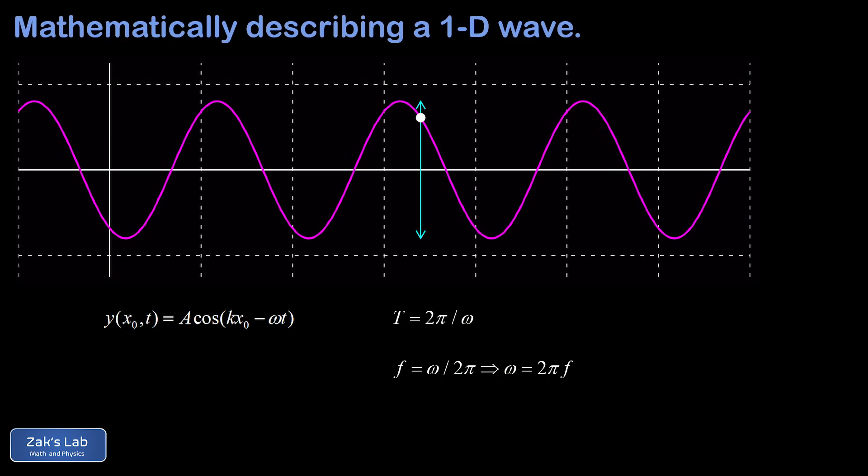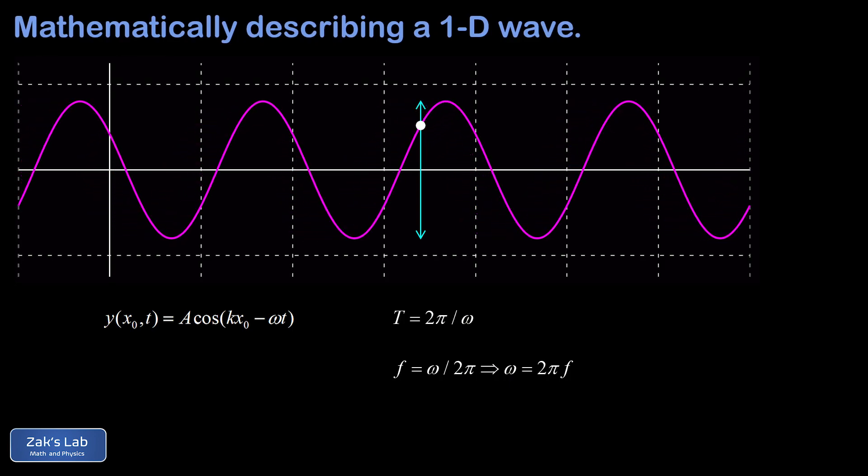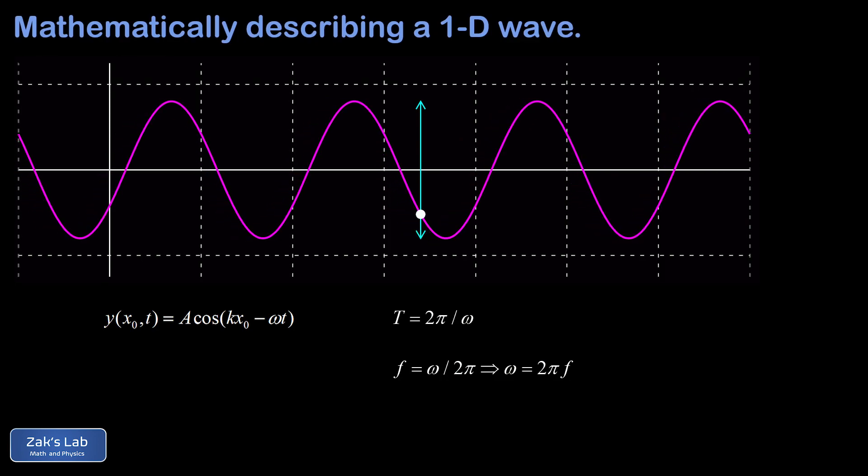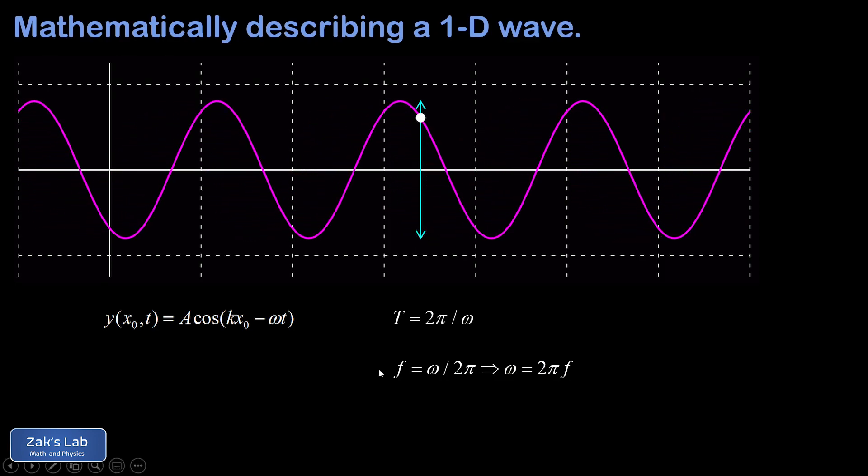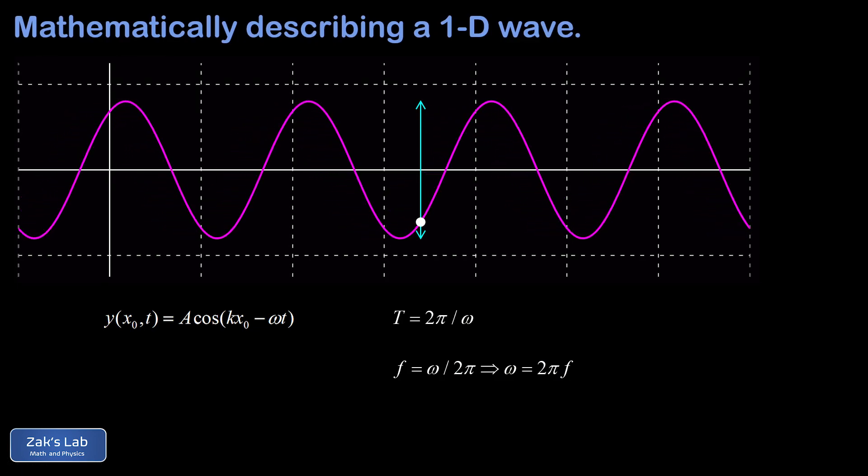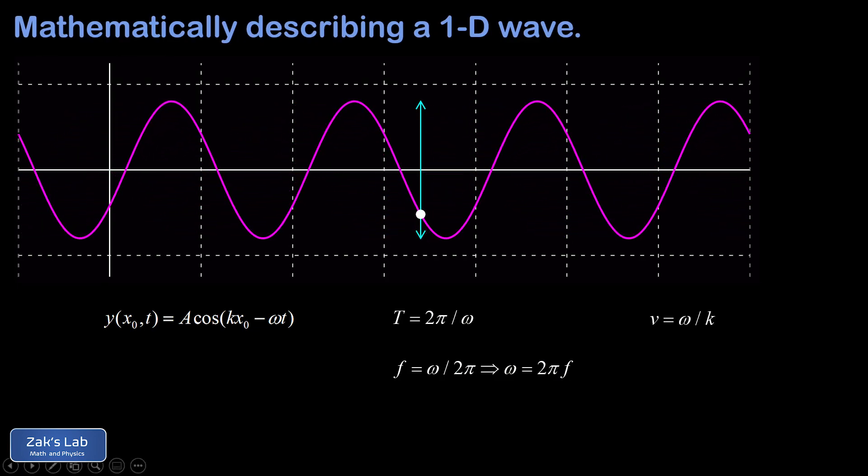Now, there's one thing I would like to address here. And that's the wave speed equation that we saw in a prior video. We learned previously that the speed of a wave is given by frequency times wavelength. But this time, we've been told the wave speed is omega divided by k. So how do we square these two things?